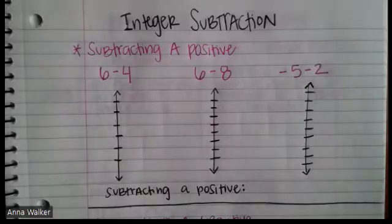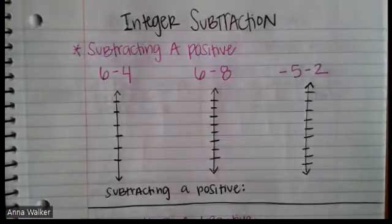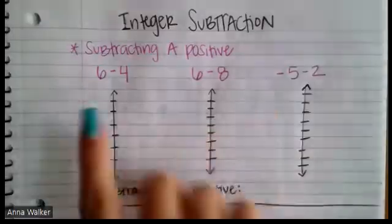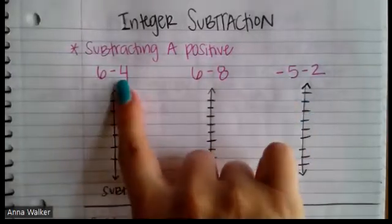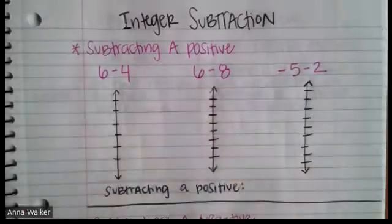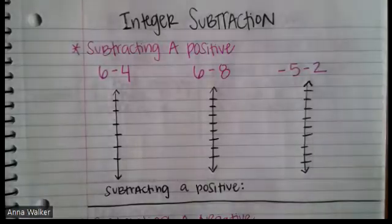When we subtract integers — those positive and negative whole numbers — there are two situations that can happen. The first situation is what happens when we subtract a positive number, meaning the first number could be positive or negative, but we're subtracting a number that is positive. We're going to use number lines to model what happens so you can see what the situation is.